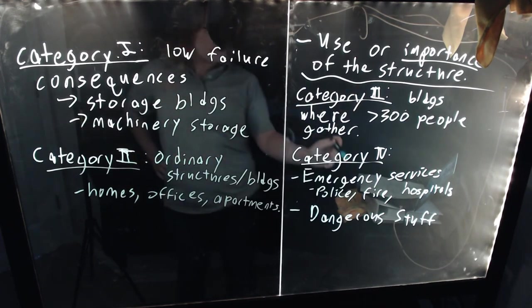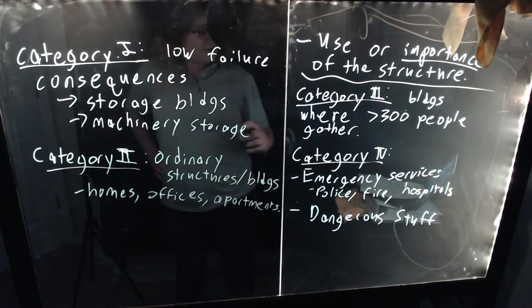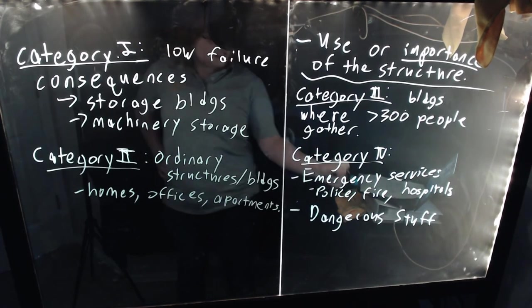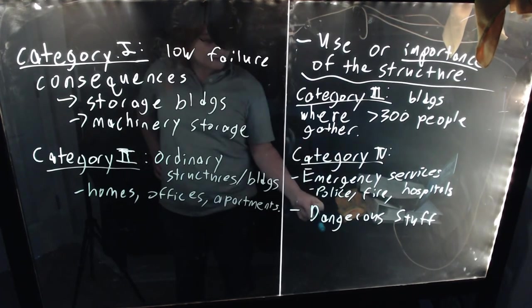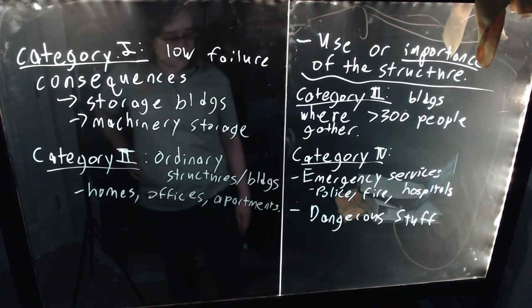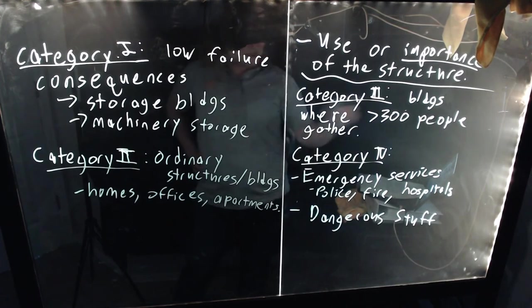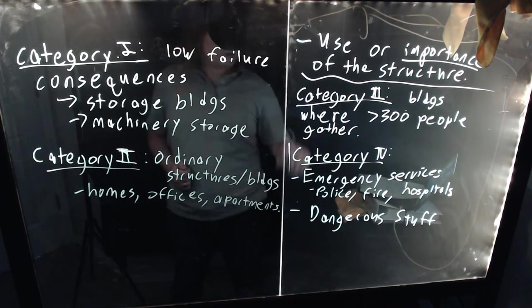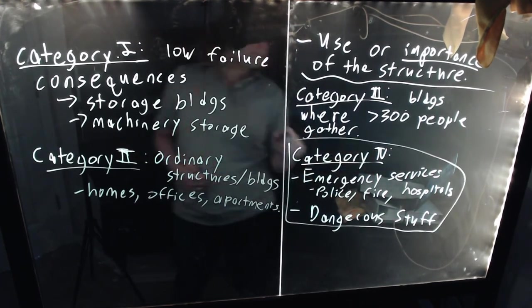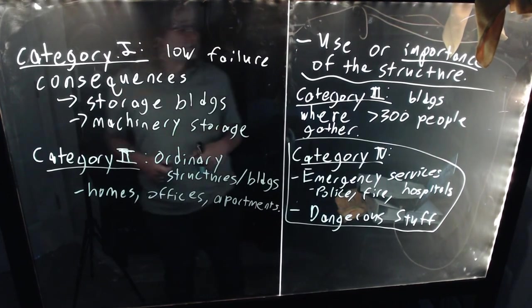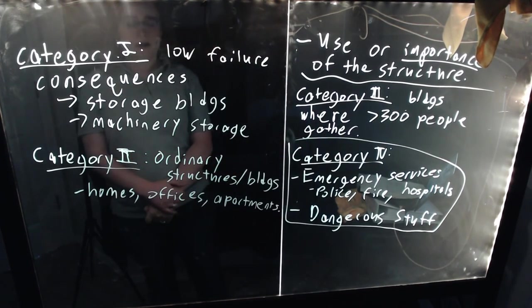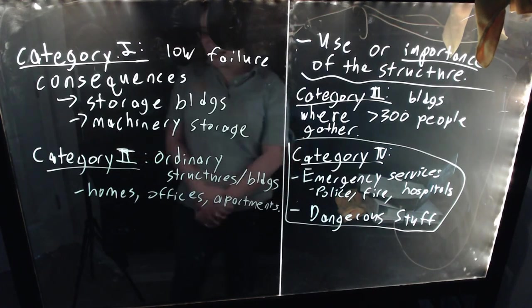So basically Category IV are things that either are needed to keep people safe from danger or that if the structure fails, they will create a major danger to the community. These types of structures are going to be the ones that have the most load magnification applied to them in terms of our risk categories, our importance categories.